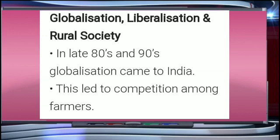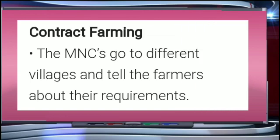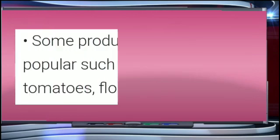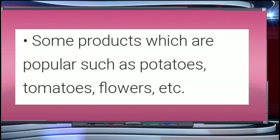The structure of the rural area changed. A new concept was introduced in the rural area known as contract farming. The MNCs go to different villages and tell the farmers about their requirements. Some popular products include potatoes, tomatoes, flowers, etc. The MNCs give the Indian farmer seeds, fertilizers, and the know-how as to how they were to be used.